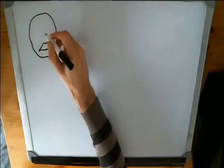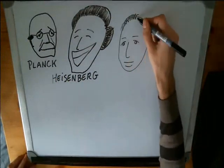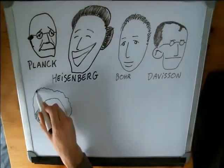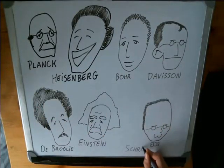It was invented in the first couple of decades of the 20th century by a lot of people all working together. Amongst them were Planck, Heisenberg, Bohr, Davison, De Broglie, Einstein, and of course Schrödinger.